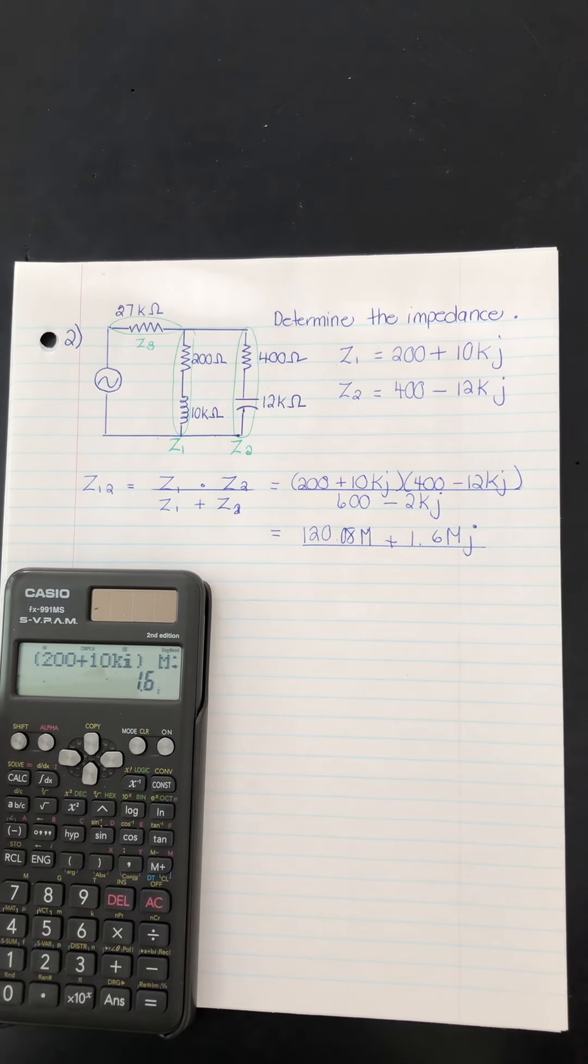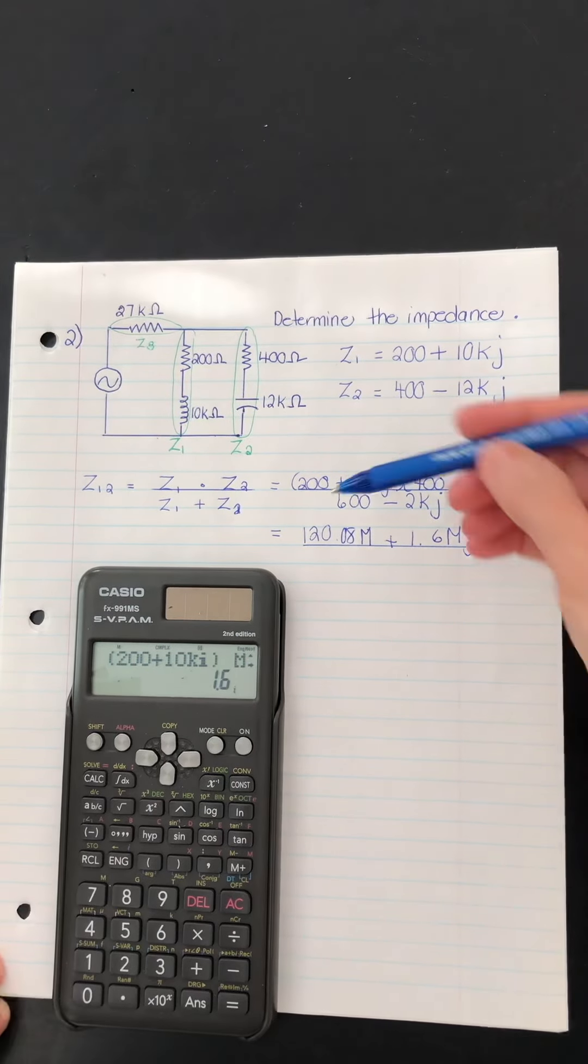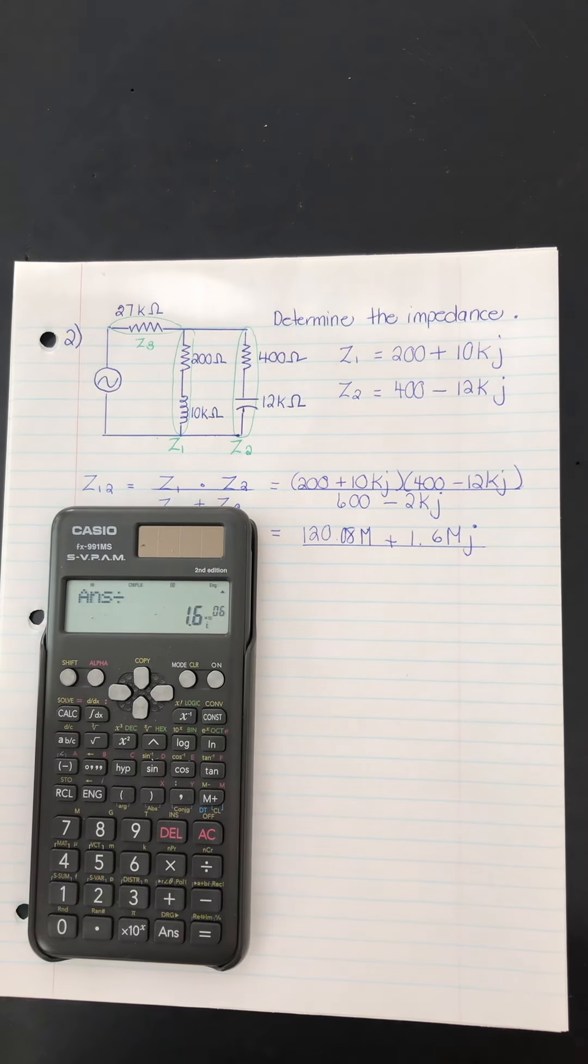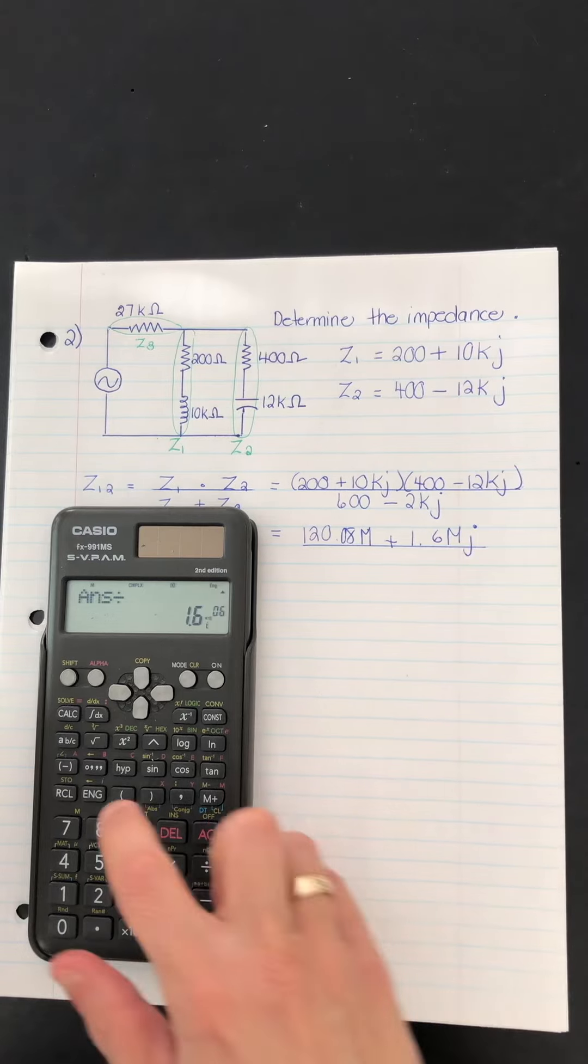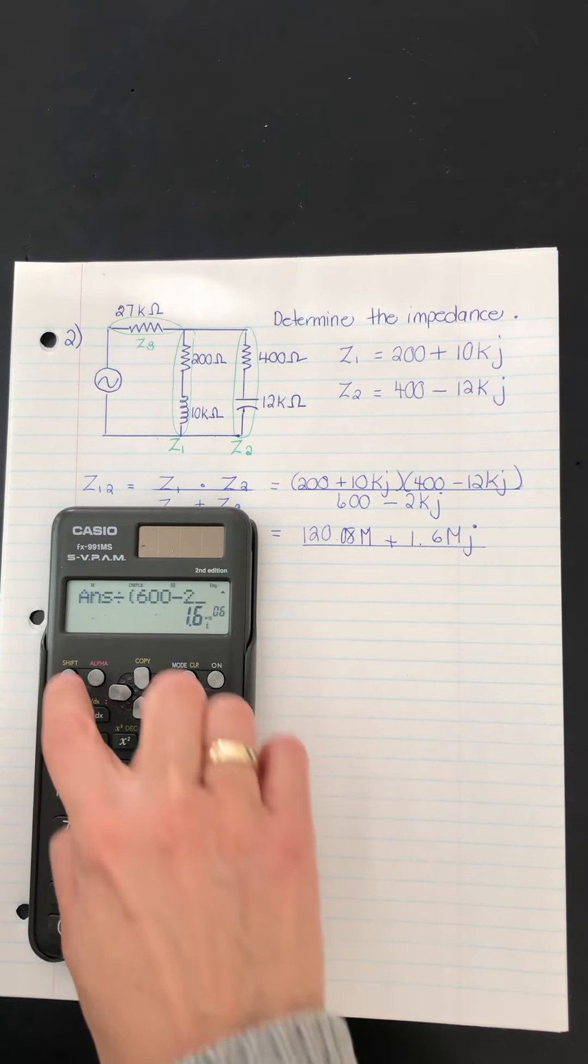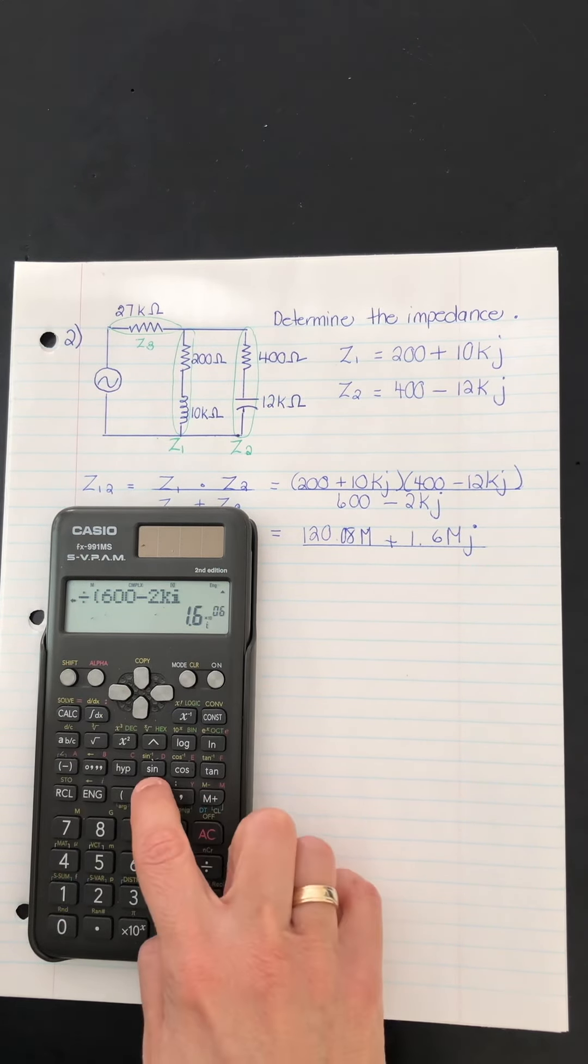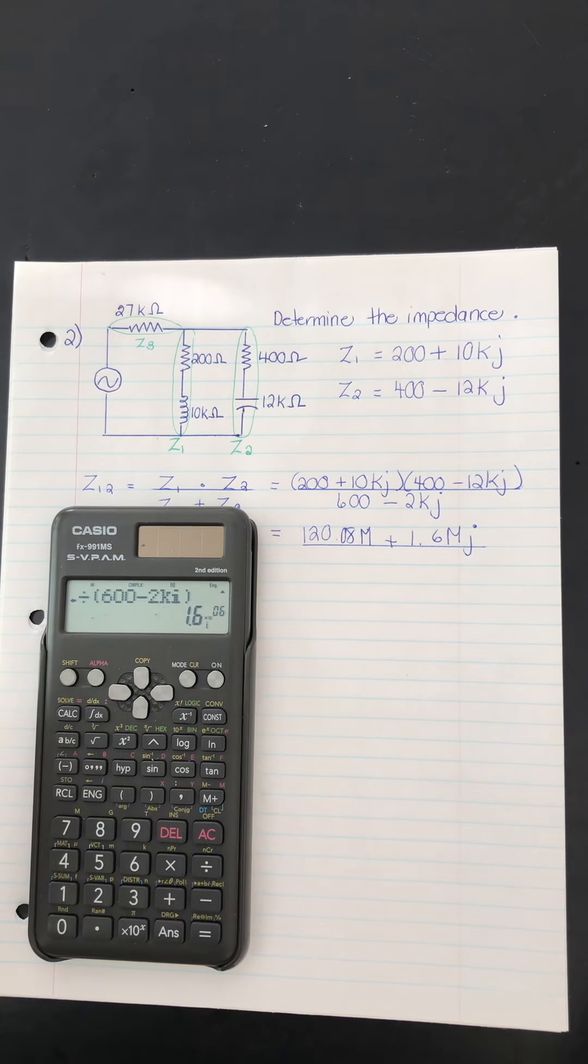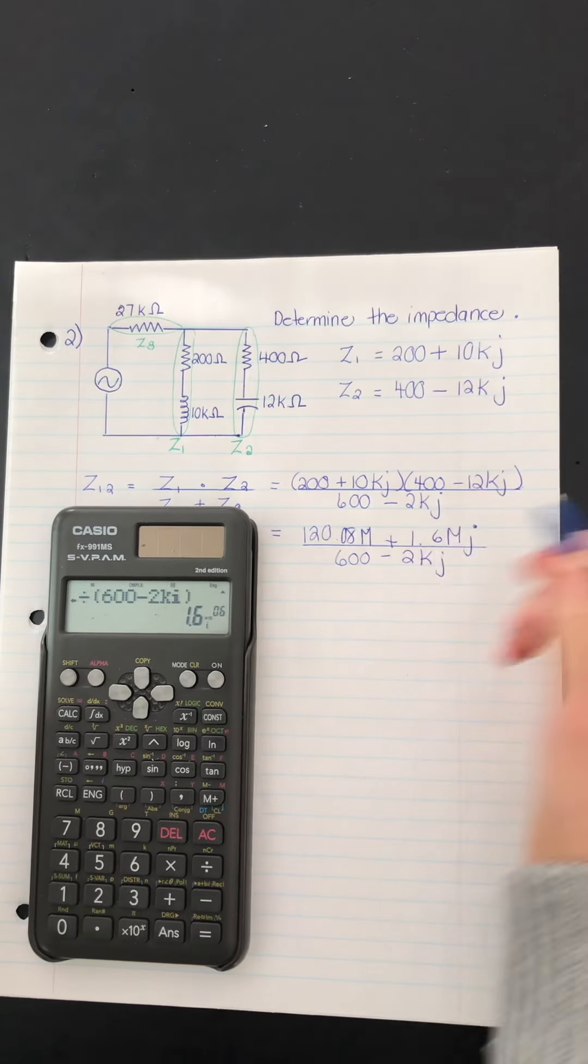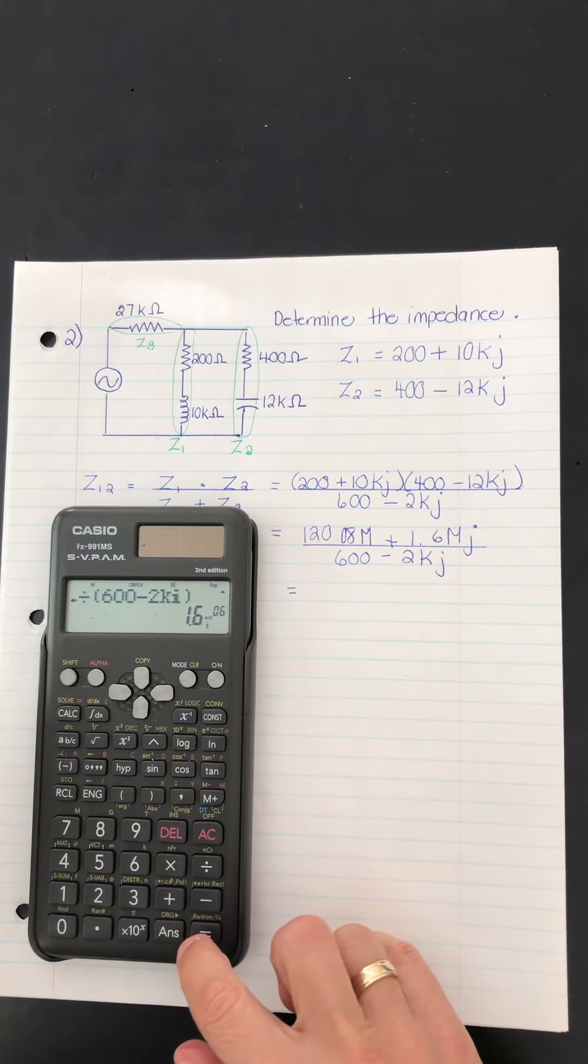So divided by, and now I have to put in this number, 600 minus 2 K, I, close it. And here comes our answer for Z12 equals.